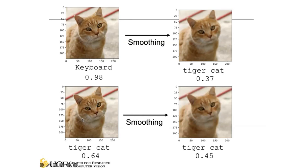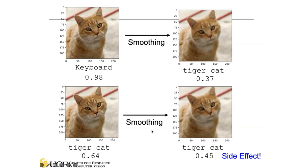In another case, a tiger cat image with 64% original confidence still gets correctly predicted after smoothing, but with reduced confidence. This is one potential side effect: if the original image doesn't have any perturbation, applying this pre-processing step — image smoothing — may result in less confident predictions. Since we don't know which images have been attacked, we have to apply the filtering to all images, and this reduced confidence is a potential side effect.